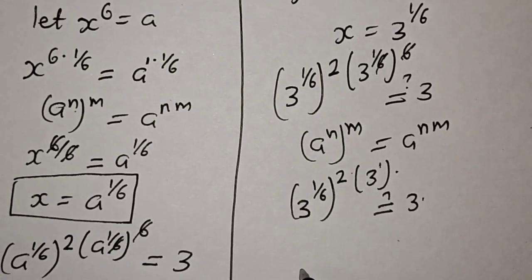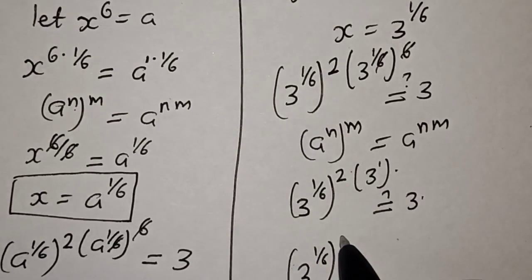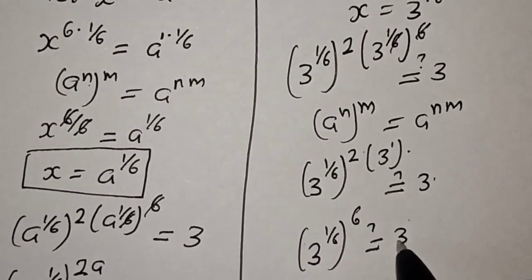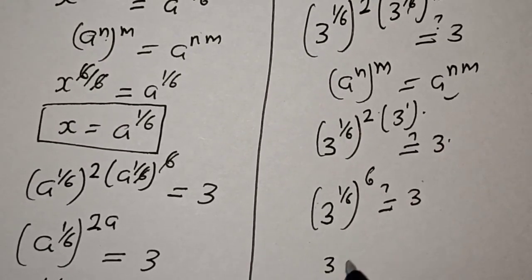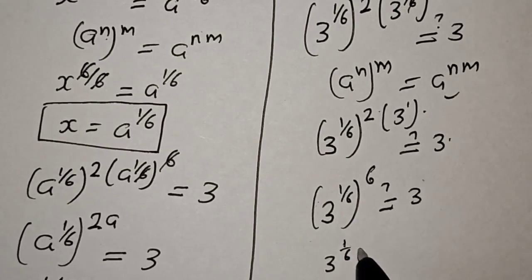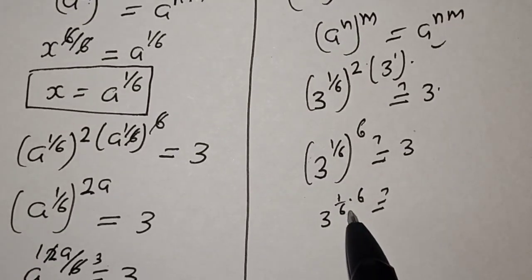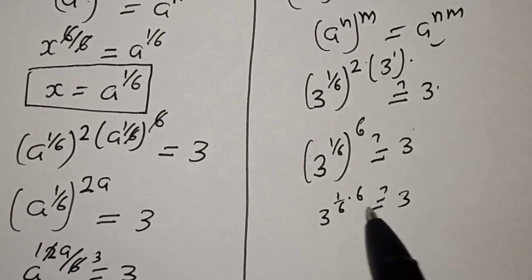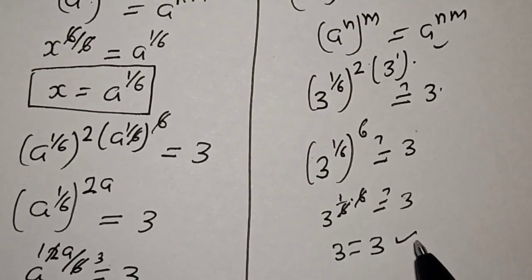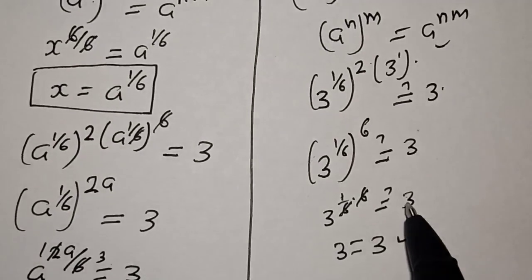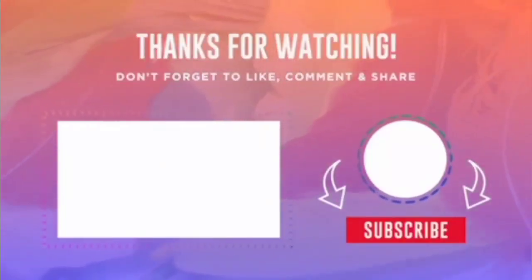This gives 3 raised to power 1 over 6, raised to power 2 times 6, which must equal 3. Applying the same rule, we have 3 raised to power 1 over 6 multiplied by 6, which must equal 3. This cancels to give 3 raised to power 1, therefore 3 equals 3, which satisfies the given equation at s equal to 3 raised to power 1 over 6. If you enjoyed the class, please don't forget to like, share, comment and subscribe. Thank you.